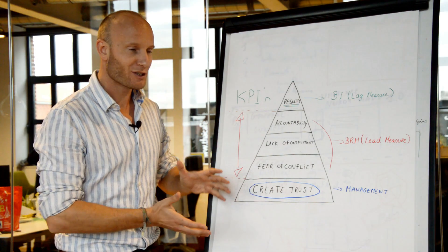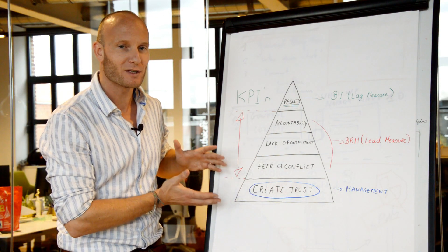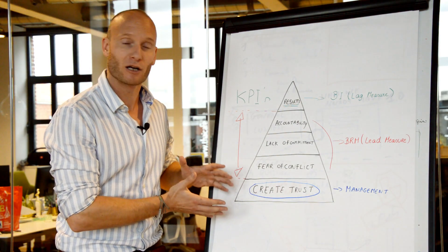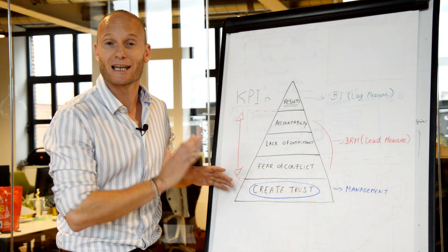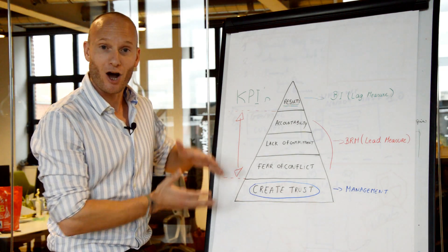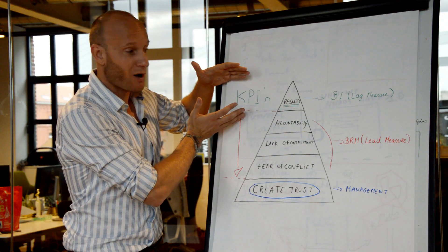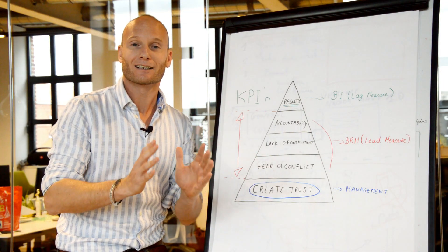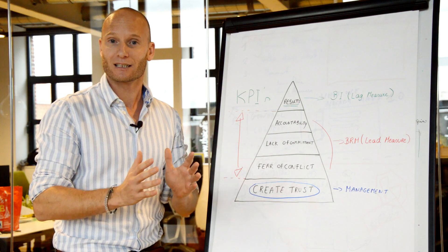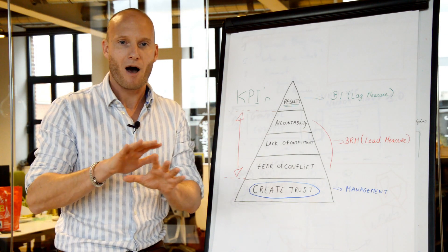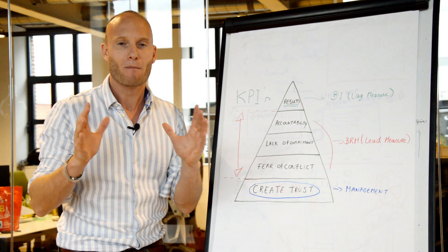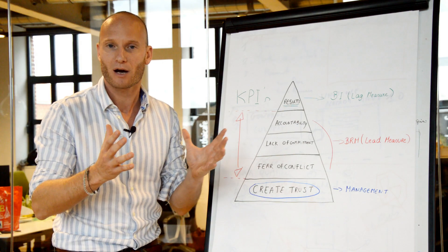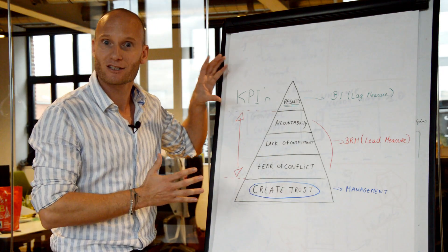First, I want to start with two observations. First of all, we see that companies are very good at installing a fair amount of trust. This base part of the pyramid is not the problem. On the other side, on the top side of the pyramid, that's not a problem at all. Companies are great at defining clear KPIs and objectives. Maybe they're a little bit all over the place in the organization and you might centralize them, making use of a business intelligence tool like Power BI, but that's not a problem.